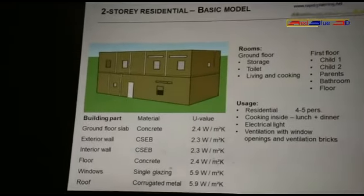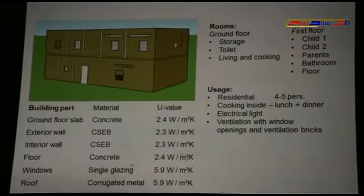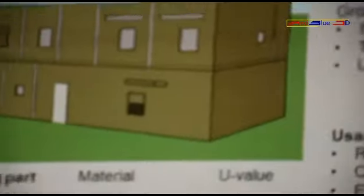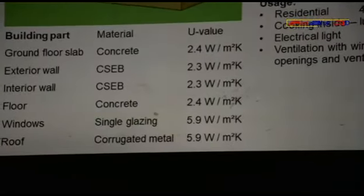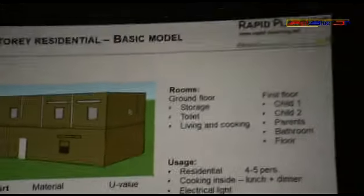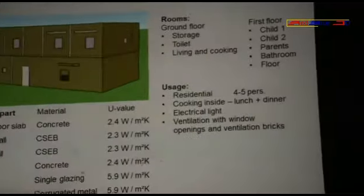We started the first calculation on a two-story residential building. We have three rooms on the ground floor: the storage room, toilet, and living and cooking room. On the first floor we have children's rooms, a parent's room, a bathroom, and the hallway. The usage is four to five people who cook twice daily for lunch and dinner. We have electrical light, and ventilation is only done through window openings or ventilation bricks.